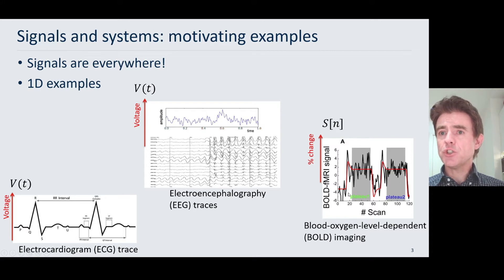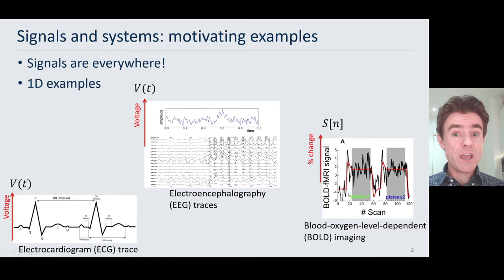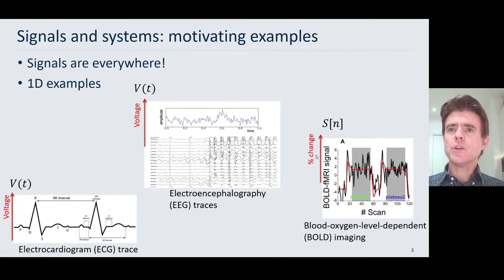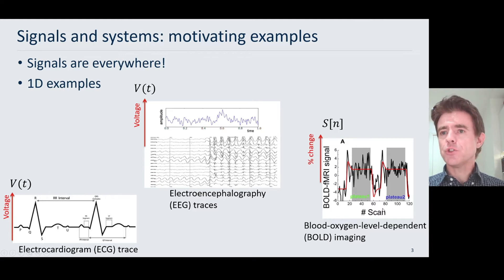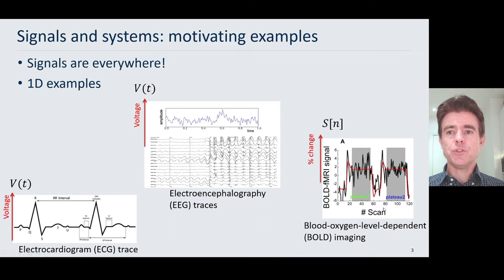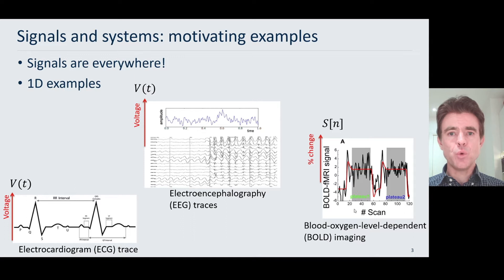In the case of medical imaging, if we were to consider magnetic resonance imaging, or fMRI, functional MRI, then we could look at the change in the bold signal as a function of different scans, where we might have different conditions that we're looking at. The point to note here is that we've got various 1D signals that are of interest.